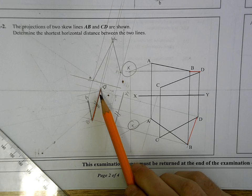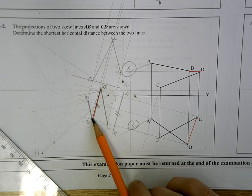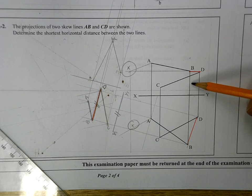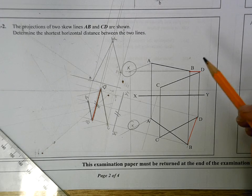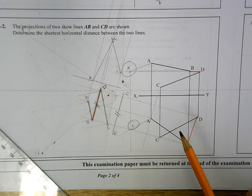Then it's just a case of dropping it back to my plan view. So my point on the CD line, my point on the AB line, replicating it here in plan view, and then dropping it up to elevation and doing the same thing. So that's the shortest horizontal distance between those two skew lines.